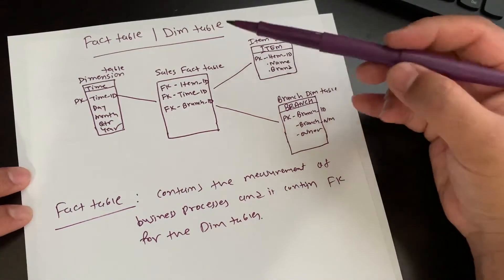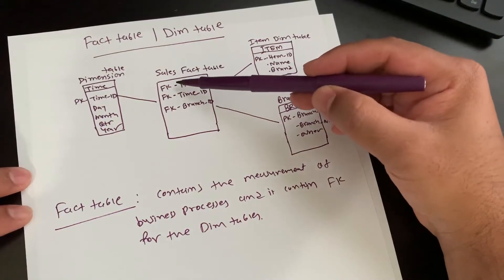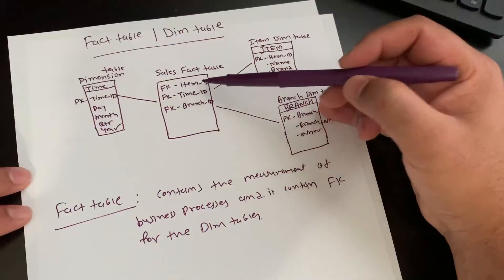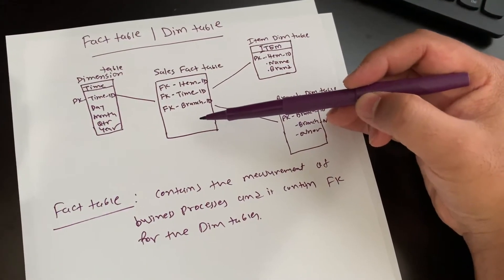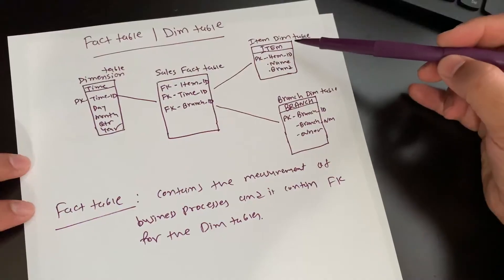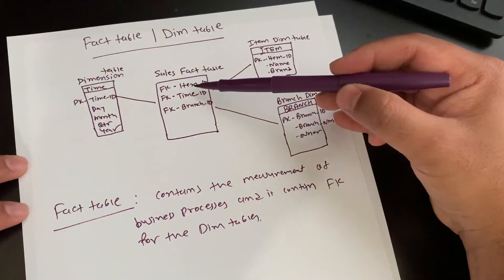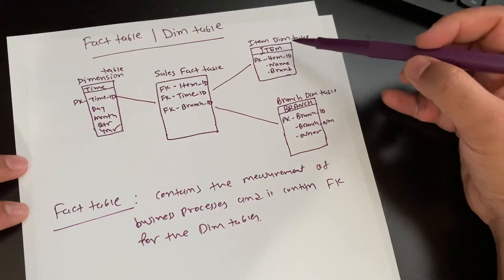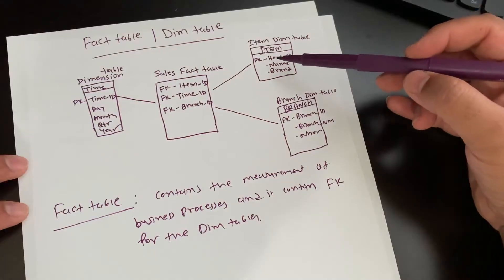In this example I took sales as a fact table. You can see that all foreign keys come from different dimension tables — first foreign key is item ID, second is time ID, then branch ID. For each of those IDs there is a corresponding dimension table. For example, the item dimension table has item ID as its primary key, which appears as a foreign key in the fact table.